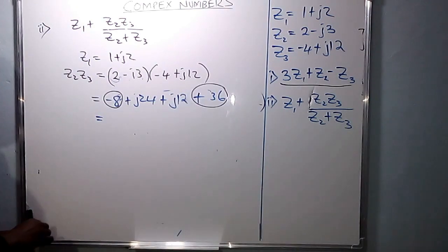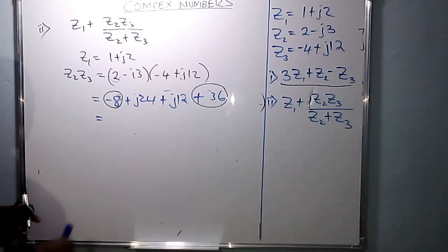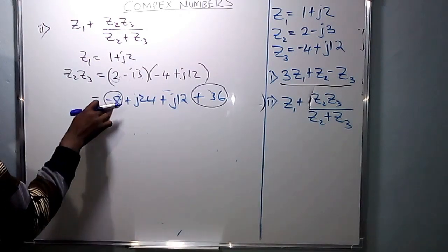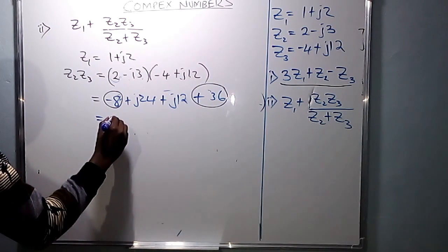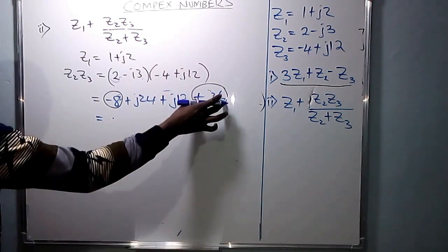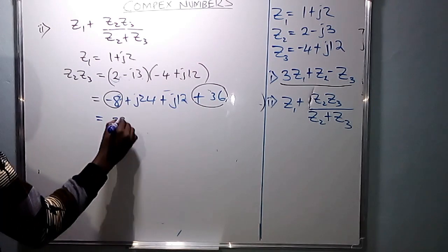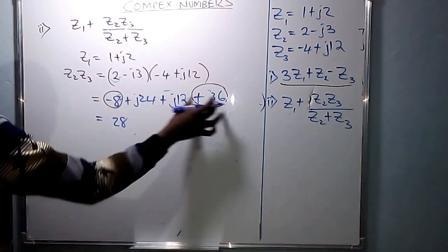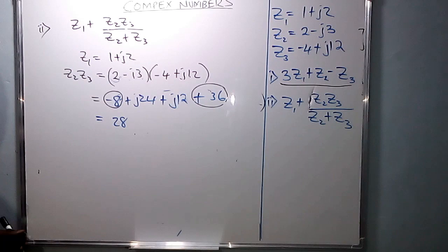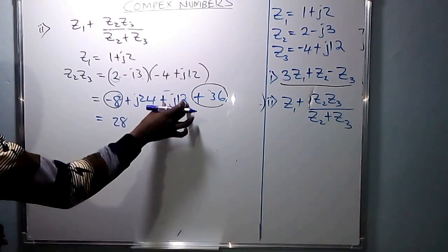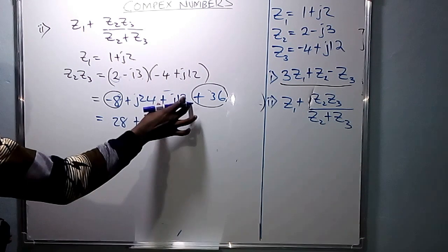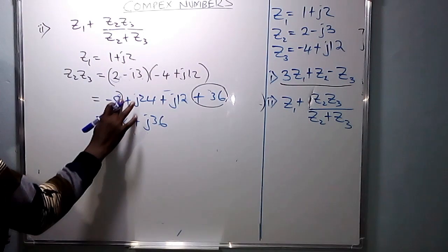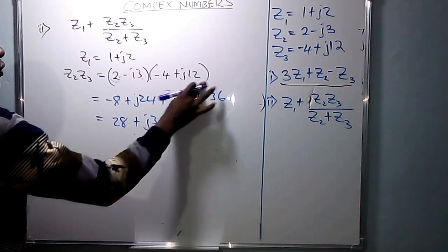Simplify by collecting the real and imaginary parts. The real terms are negative 8 and positive 36, giving 28. The imaginary terms are positive j24 and positive j12, giving positive j36. So Z2·Z3 equals 28 plus j36.